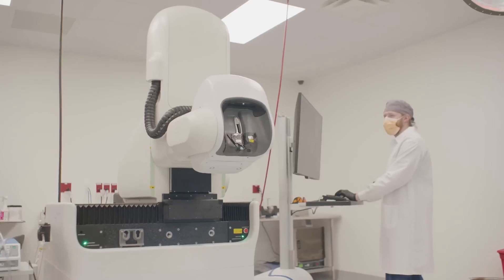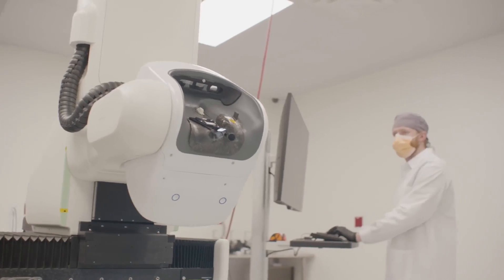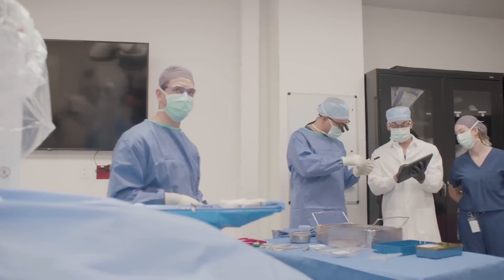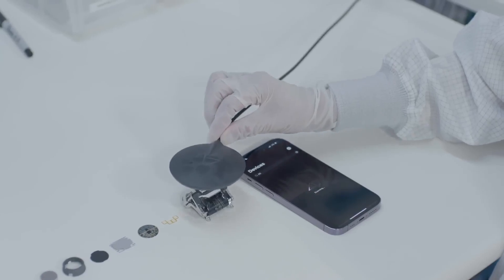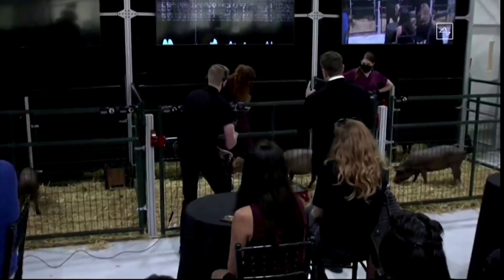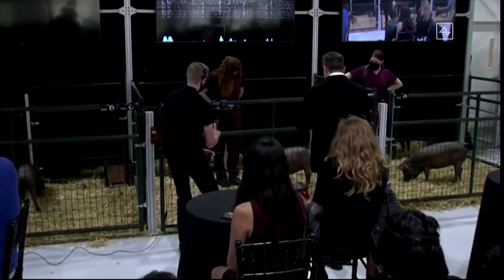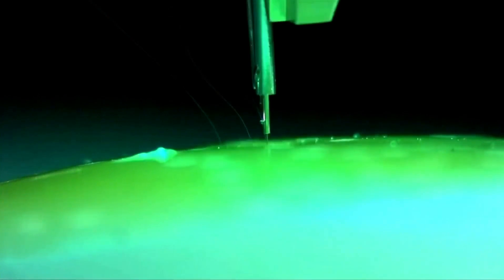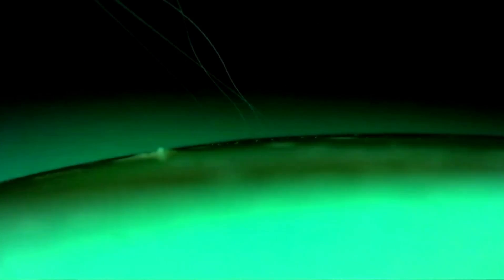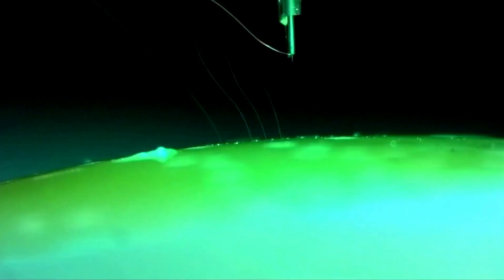In 2016, Musk launched Neuralink with a team of neuroscientists, engineers, and researchers, pooling their expertise to realize this ambitious vision. The company aimed to develop high-bandwidth, implantable BCIs that could establish a direct connection between the human brain and external devices.